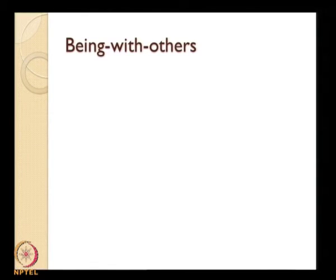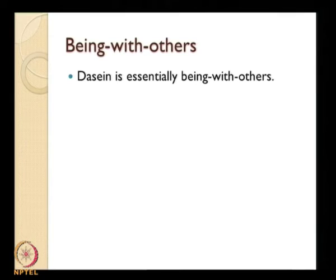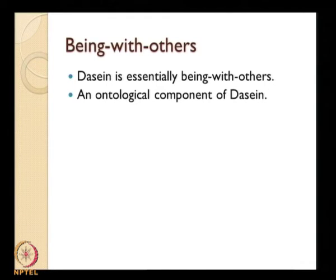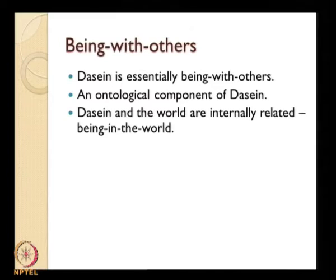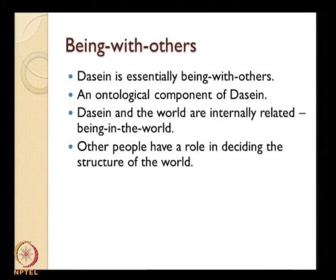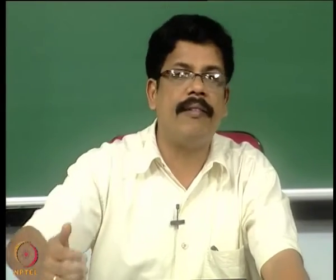Dasein is a being-in-the-world; it finds itself in the world — the facticity of Dasein. There is one more very important aspect: being-with-others, because Dasein always finds itself in a world it shares with other people. Dasein is essentially being-with-others; it is an ontological component of Dasein. Being always with others constitutes the ontological character of Dasein. Dasein and the world are internally related.